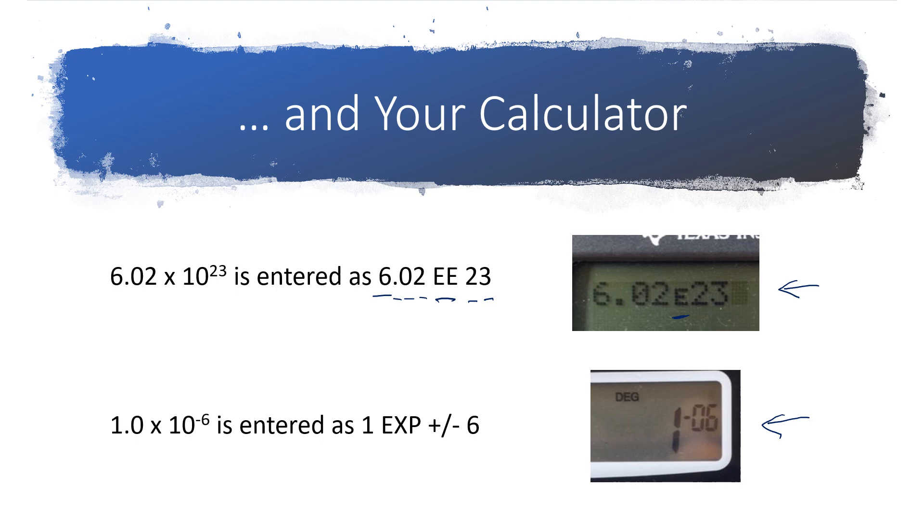Down here on the bottom, the number that was entered was 1 times 10 to the negative 6. What I wanted to show you was the difference in display. Even though it's a TI calculator, it does not show the E. It does not show anything like a times 10. It just shows the exponent as the negative 6 as smaller digits. If you need to enter a negative exponent because you've got a number that's smaller than 1, you're going to hit something like 1 and then the EXP key or the EE key. And then your calculator will have some sort of a change sign key.